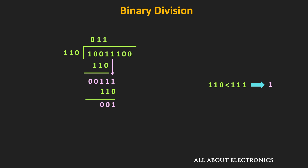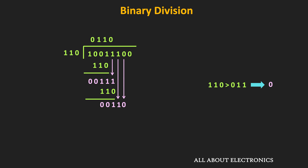After the second subtraction, we bring down the next bit of the dividend and compare 011 with 110. Since 011 is less than 110, we cannot subtract, so in the quotient we write 0. We then bring down the next bit of the dividend, which is 0, making the number 110. Since 110 equals the divisor, we can perform the subtraction, so in the quotient we write 1. After the subtraction, the result is equal to 0.